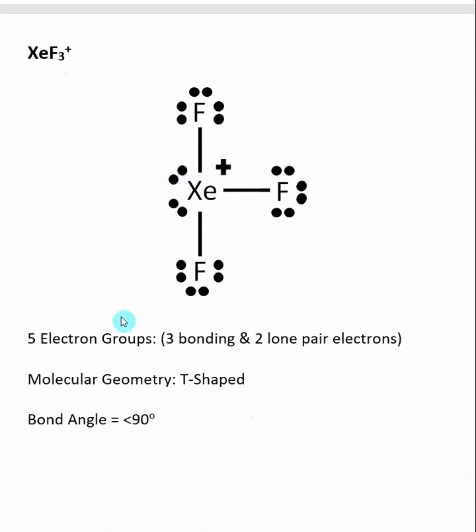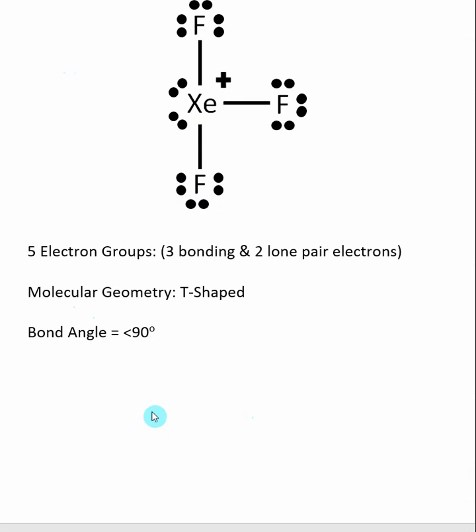There are five electron groups. Of these three are bonding, and two are sets of lone pair electrons. This means that our molecular geometry is T-shaped, and the fluorine-xenon-fluorine bond angle is going to be less than 90 degrees.